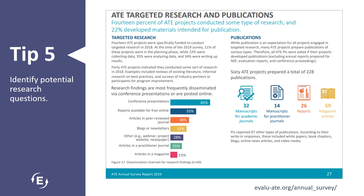Reading through the ATE survey report might spark questions that lead to ideas for additional research. For example, as discussed in the previous tip, a potential research question could seek to explore how ATE projects recruit students from different groups, such as students of color, women, or first-generation students. There's a lot of potential for research in ATE, and the survey report can help identify those questions for further investigation.